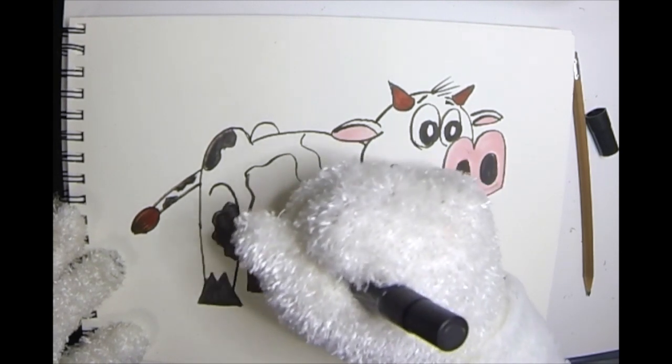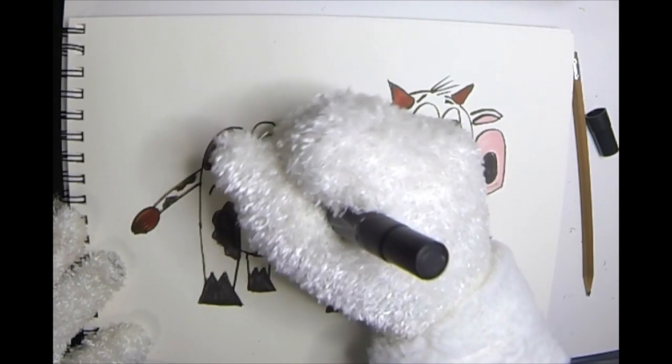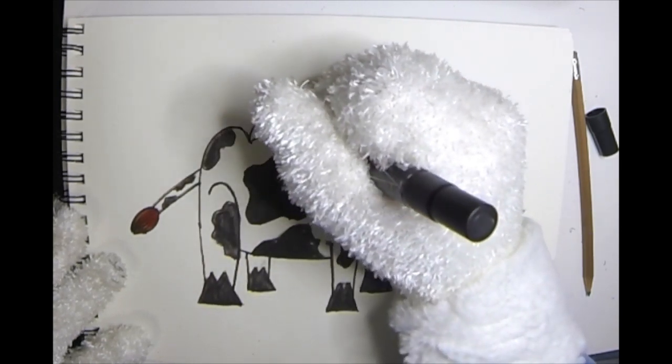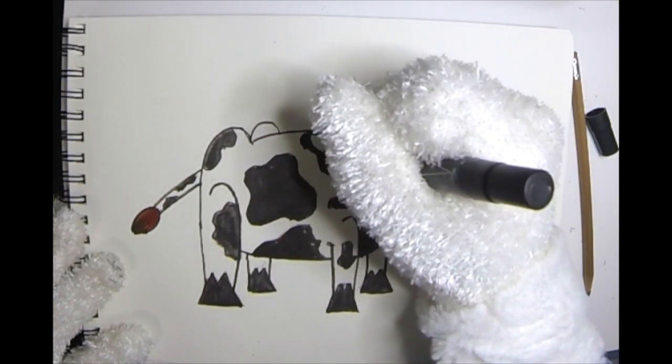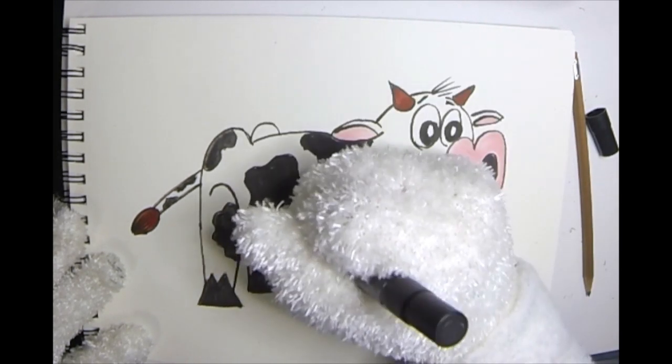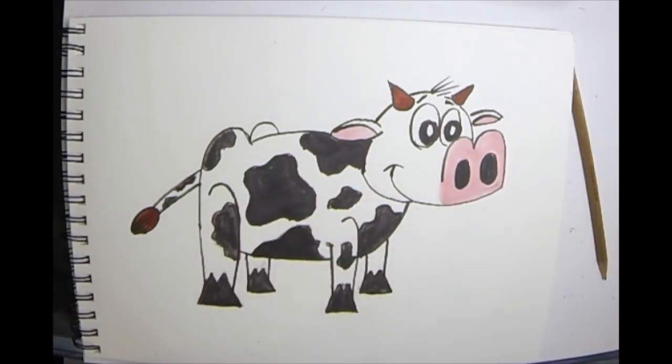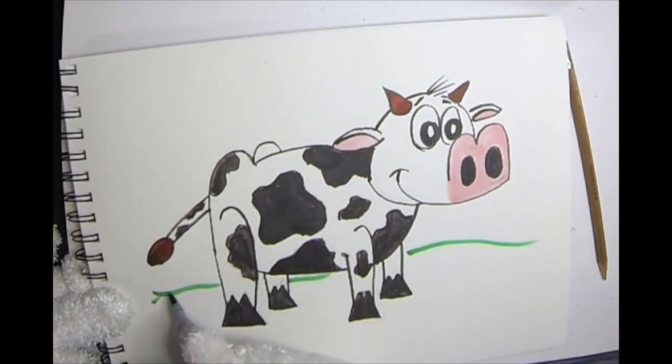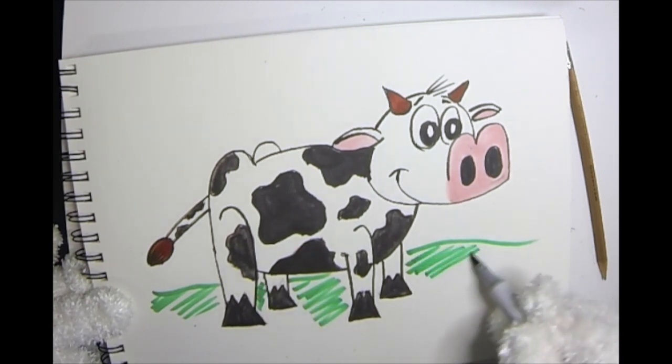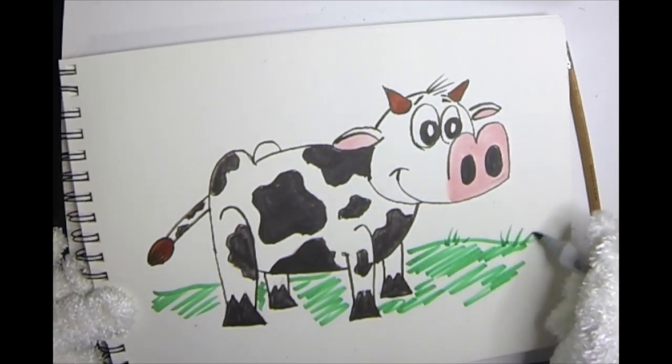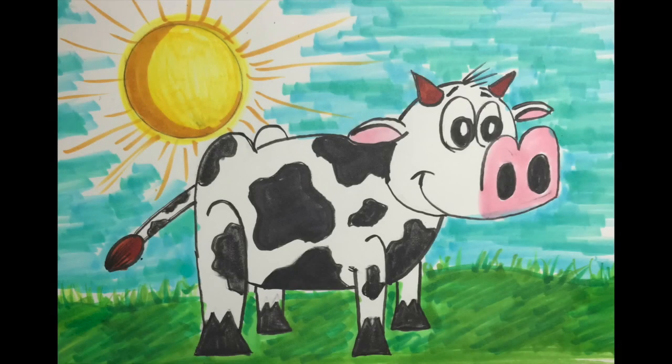All right. Let's do that. All right, there's my cow. Now I'll just add a little bit of a background. Let me get some other colors ready. Maybe some grass underneath the cow, a nice little farm area for him. All right.